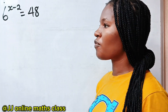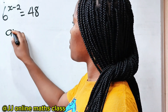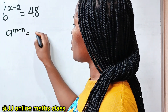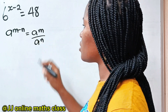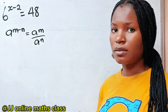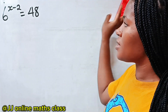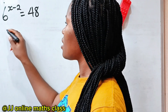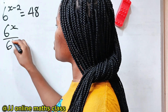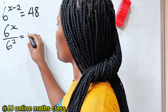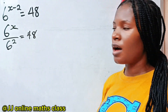First, recall the law of exponents that states that a to the power of m minus n is equal to a to the power of m divided by a to the power of n. So that means that we can write this as 6 to the power of x divided by 6 to the power of 2 is equal to 48.